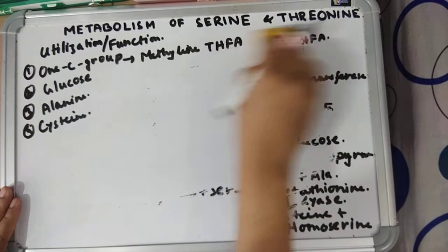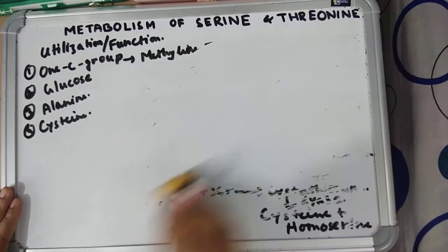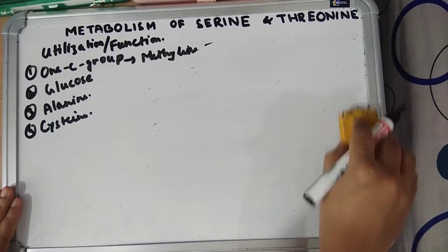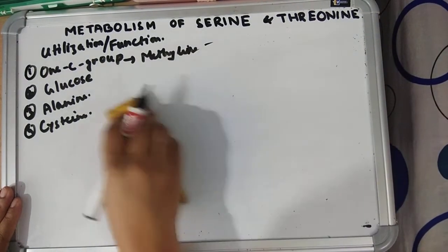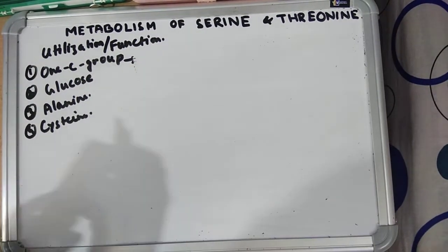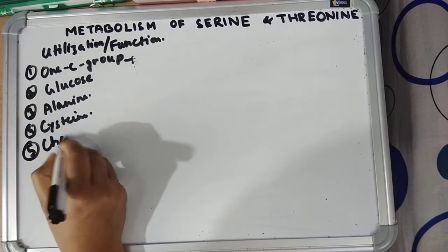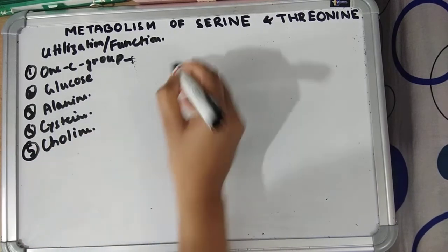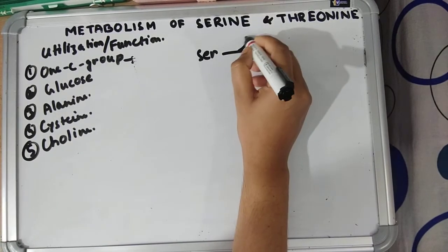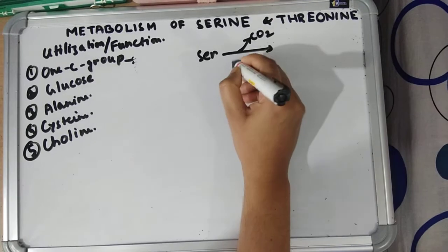Number five is choline synthesis. Glycine, serine, and choline synthesis are interlinked, forming a cycle known as the glycine-serine-choline cycle. First, serine undergoes decarboxylation by serine decarboxylase.